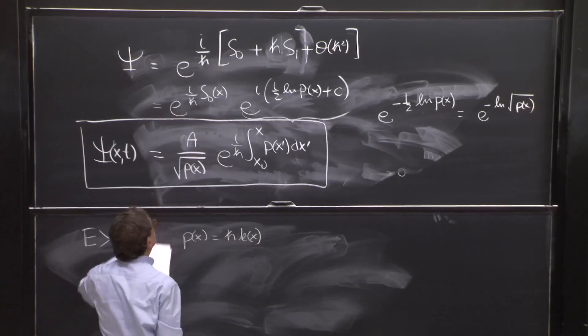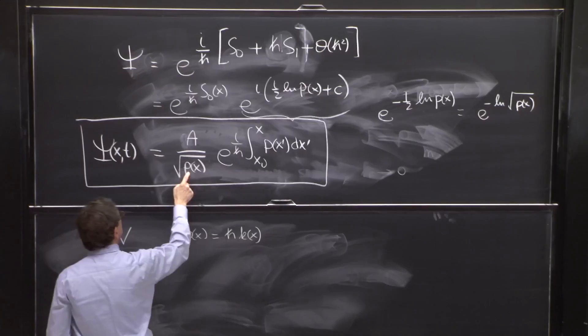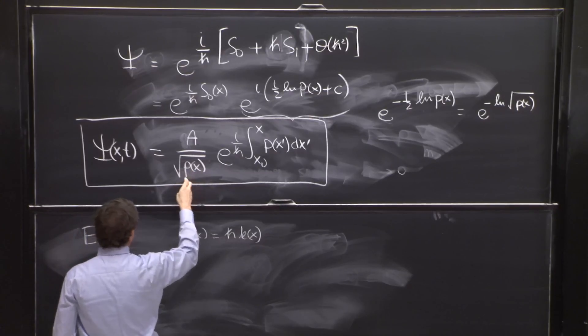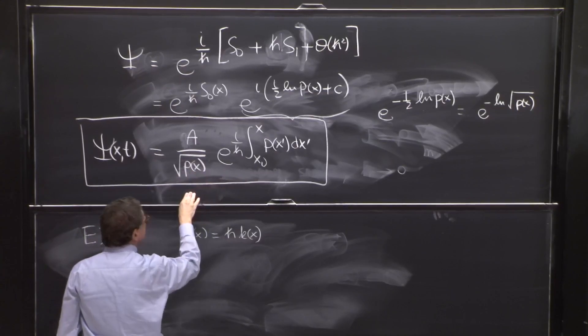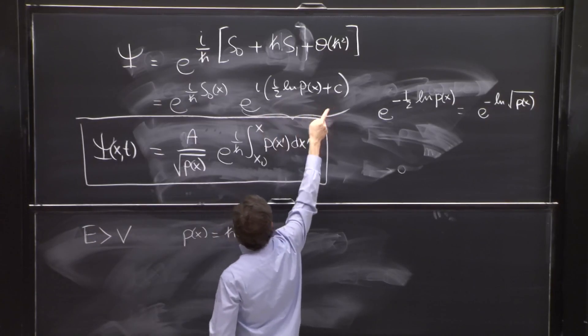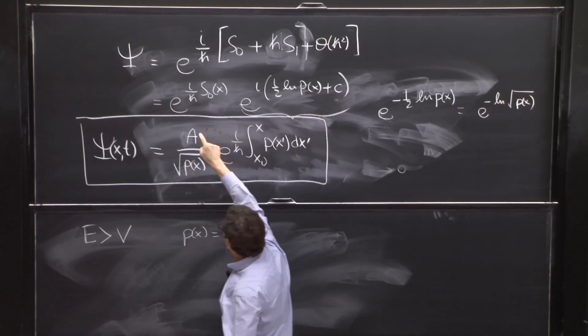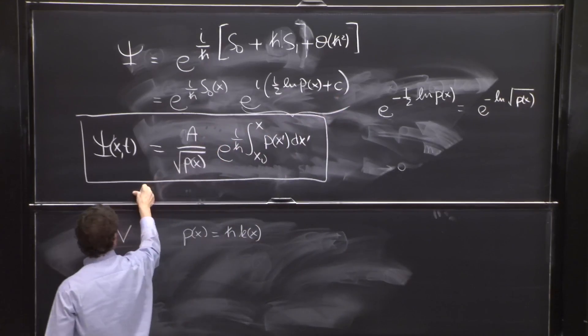We're not attempting to normalize these wave functions. We could not attempt to do it because we don't know what p of x is. And this function may have limited validity, as we've spoken. But I had the constants here. This constant could have a real or imaginary part. It would affect this a. So let's put it there.